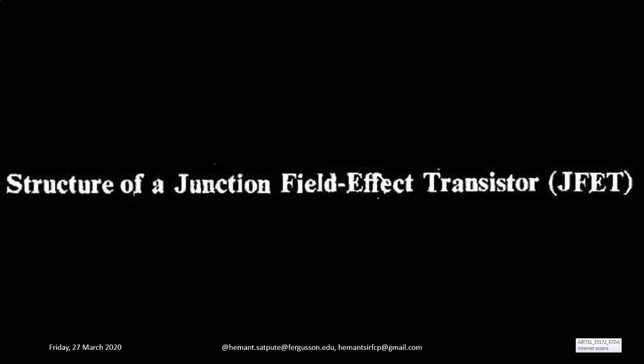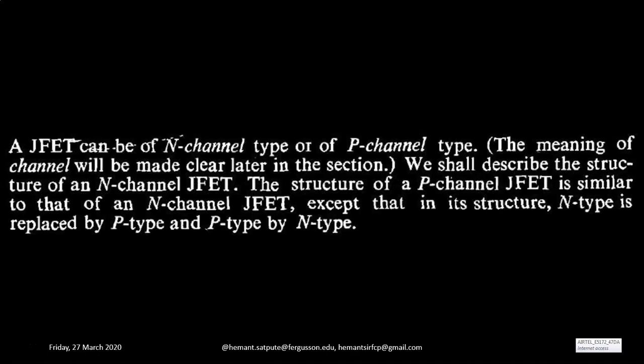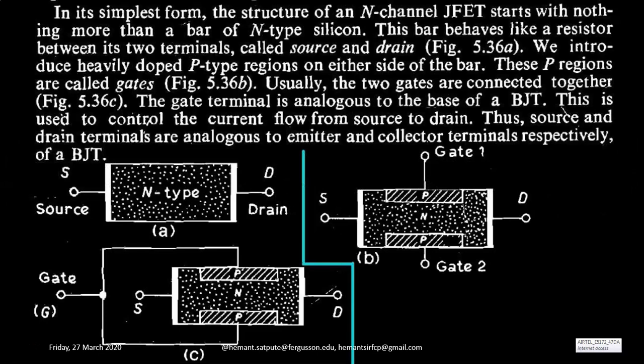Structure of a Junction Field Effect Transistor — JFET. A JFET can be of N-channel type or P-channel type. The meaning of channel will be made clear later in this section. We shall describe the structure of an N-channel JFET. In its simplest form, the structure of an N-channel JFET starts with nothing more than a bar of N-type silicon. This bar behaves like a resistor between its two terminals called Source and Drain, S and D.